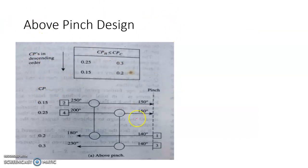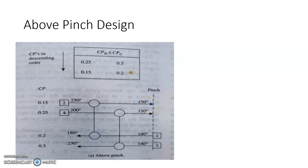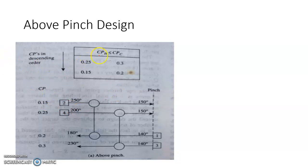Above the pinch line, hot streams run from 250 to 150 and 200 to 150. The CP values are 0.15, 0.25, 0.20, and 0.30. We calculate the heat content each stream can pass on to cold streams. For stream 2: (250 − 150) × 0.15 = 15 MW. For stream 4: (200 − 150) × 0.25 = 12.5 MW.